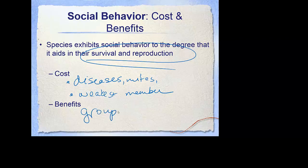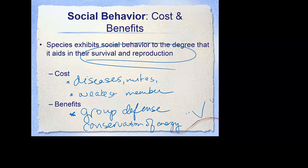But there are also huge benefits. Group defense — even if there is a weak member, there's a group there to help protect it. What about conservation of energy? Think about when geese fly in a V formation. They fly this way because the air currents change and it actually allows the individuals at the back to put in less effort. They rotate this V on a regular basis, sharing the energy drain and helping migrations go much smoother.